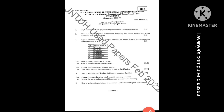The first question is: explain the need of data processing and various forms of pre-processing. That is the first question, directly given for 15 marks. The second question is: what is a data warehouse? Demonstrate integrating data mining system with a database or data warehouse with a neat diagram. That is also a direct question for 15 marks.